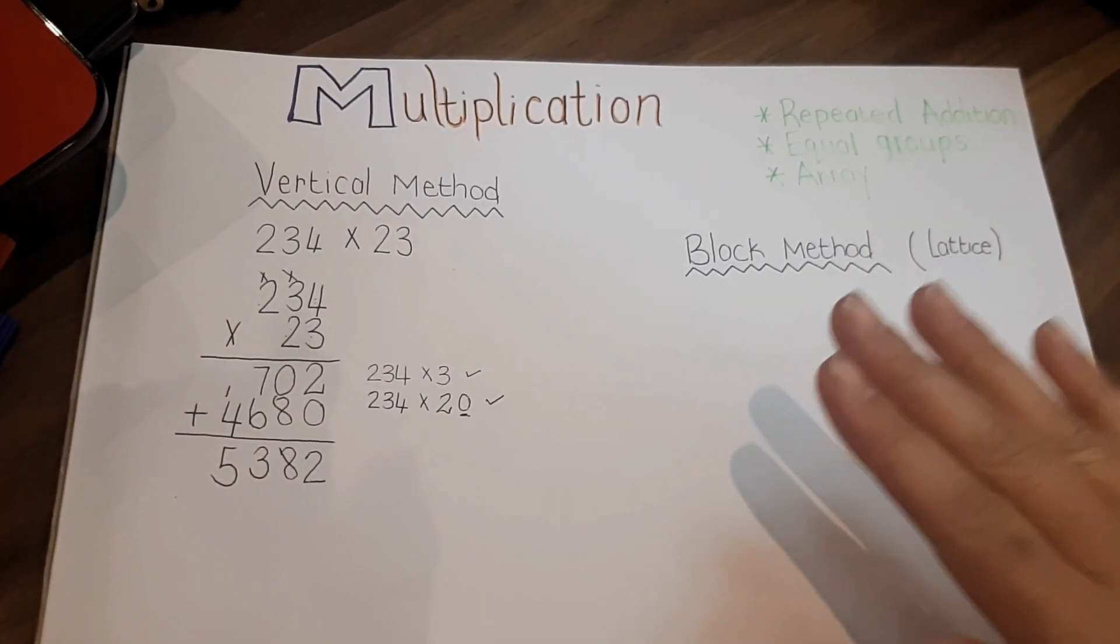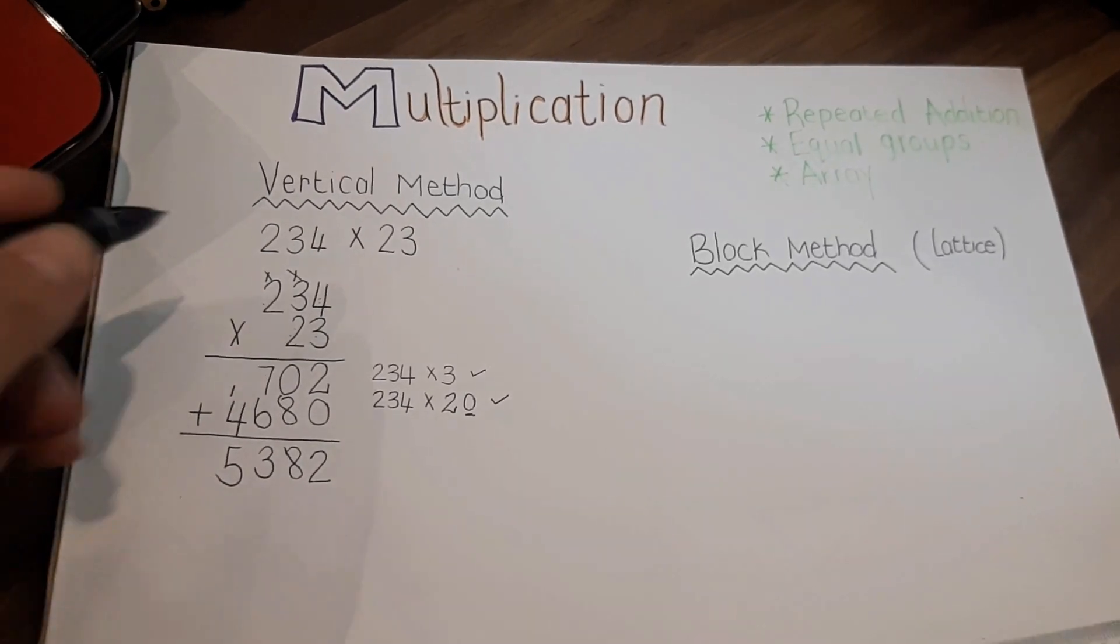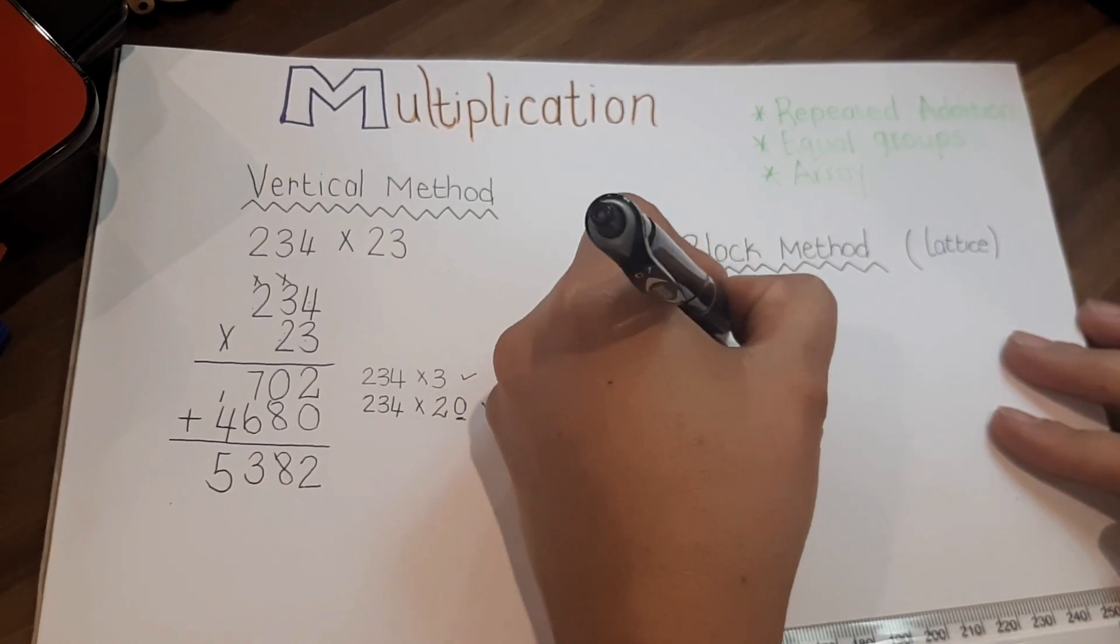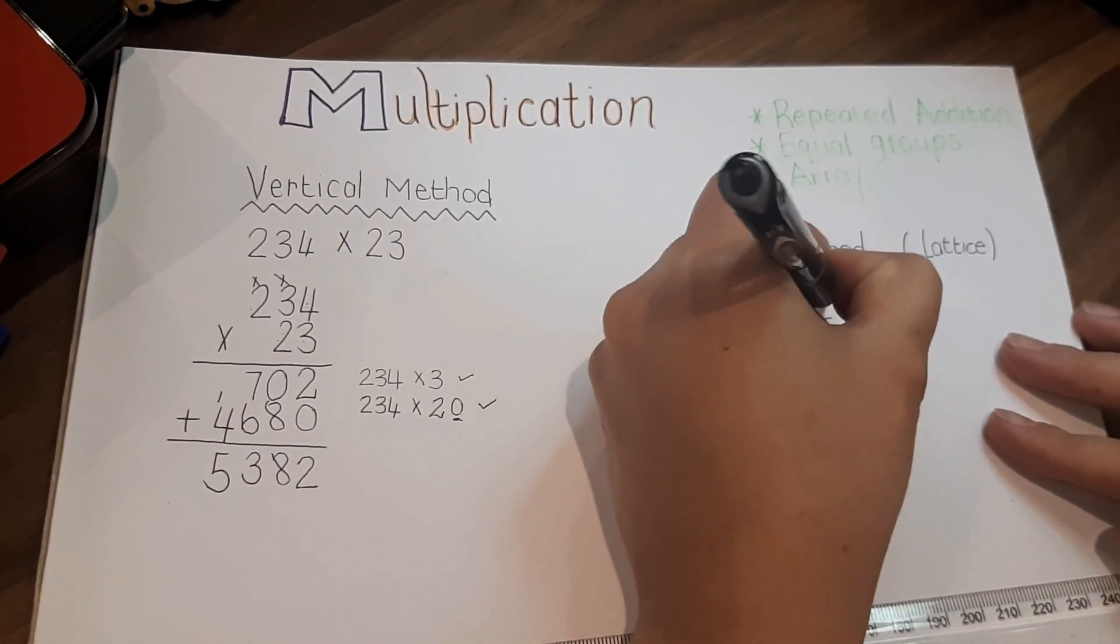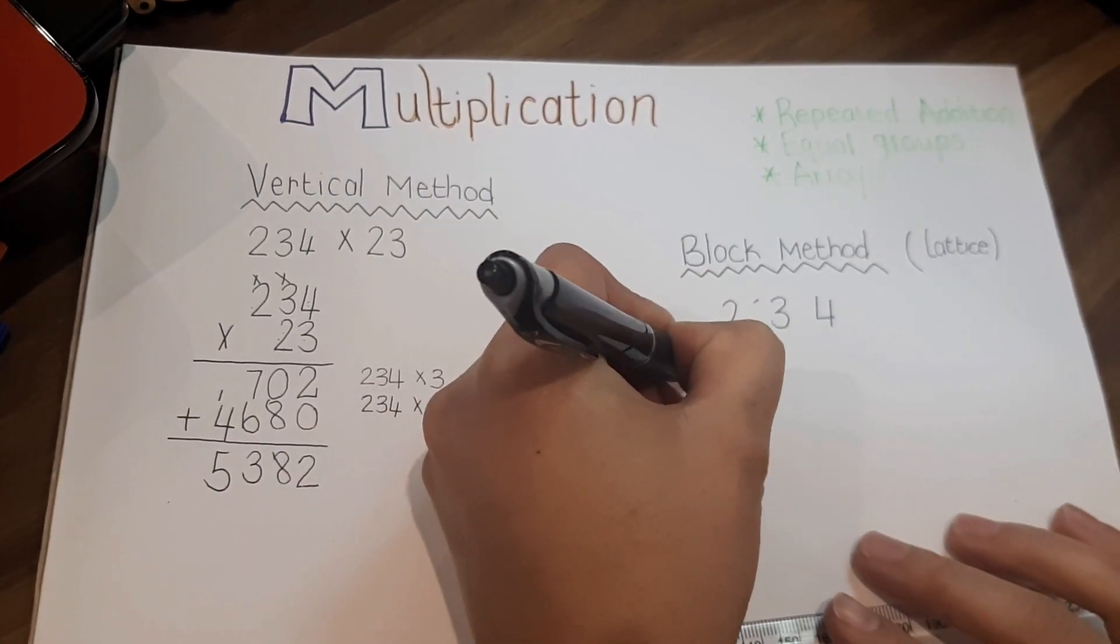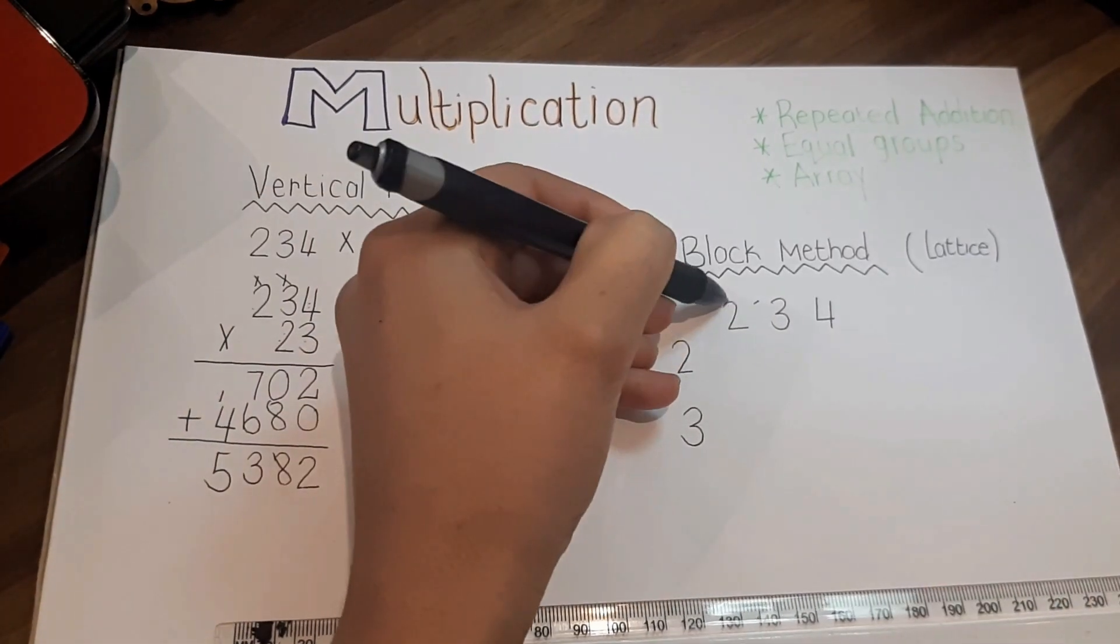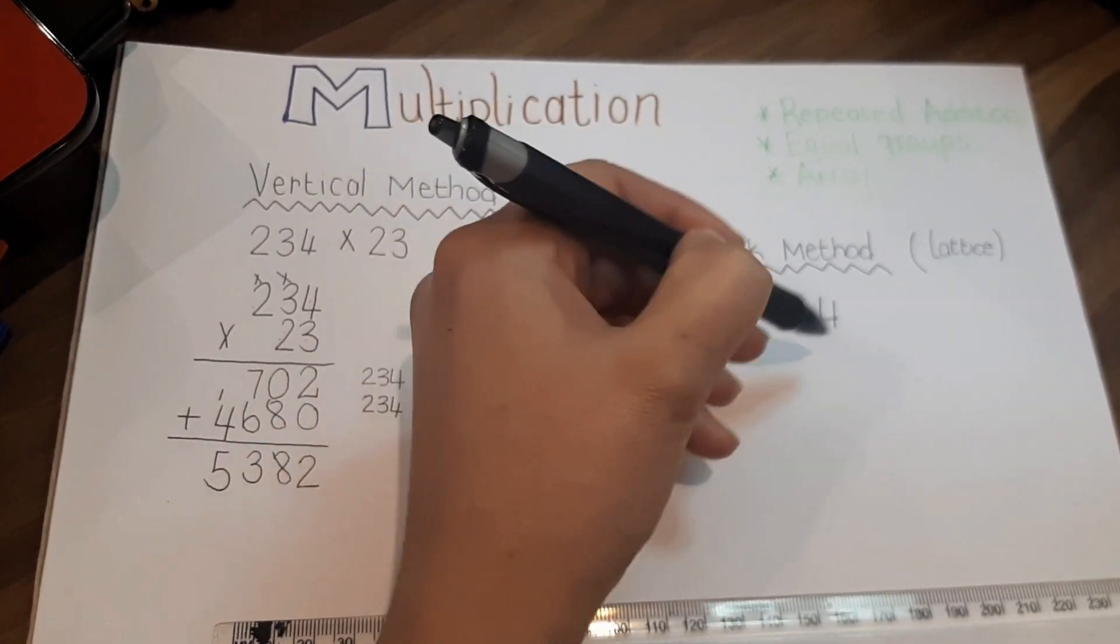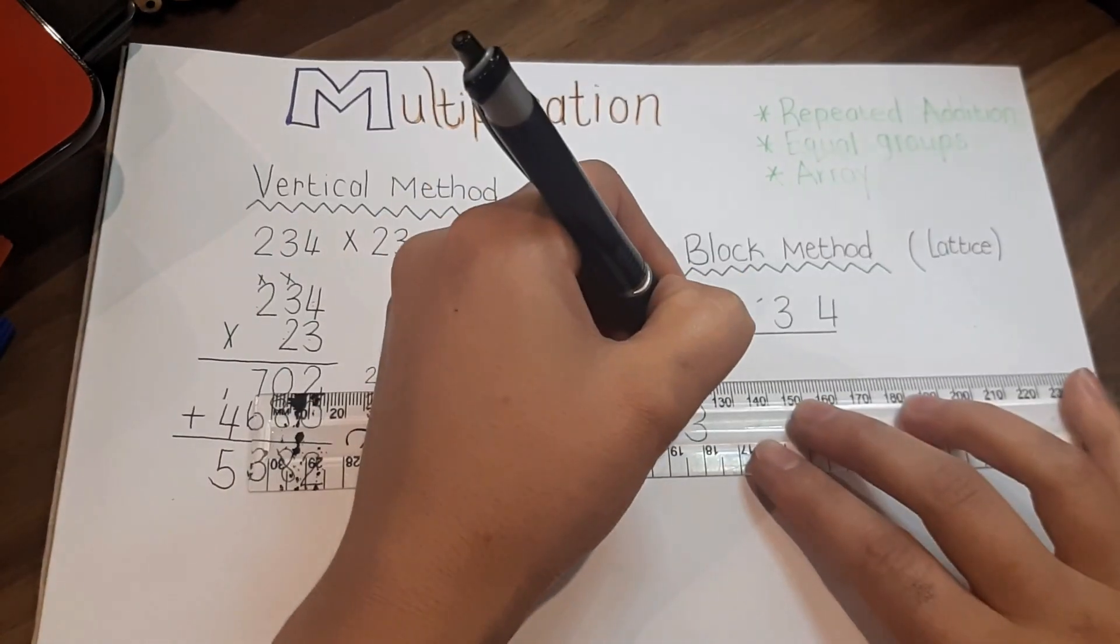I'm going to use exactly the same numbers and I'm going to draw the block with you so you can see exactly how the block is formed. First of all, each digit needs a block, so 234 and 23. Each digit here will have a column and each one here will have a row.